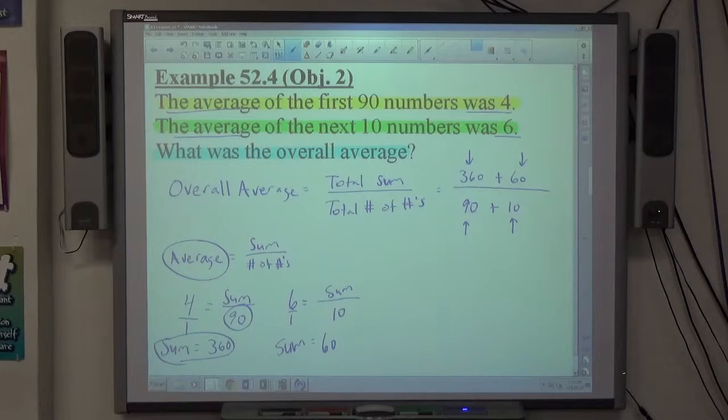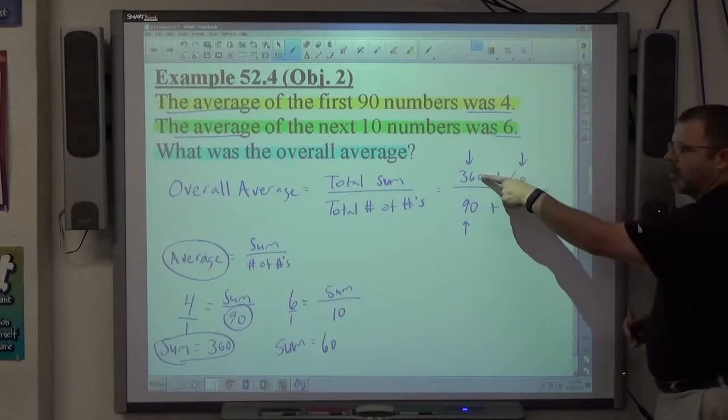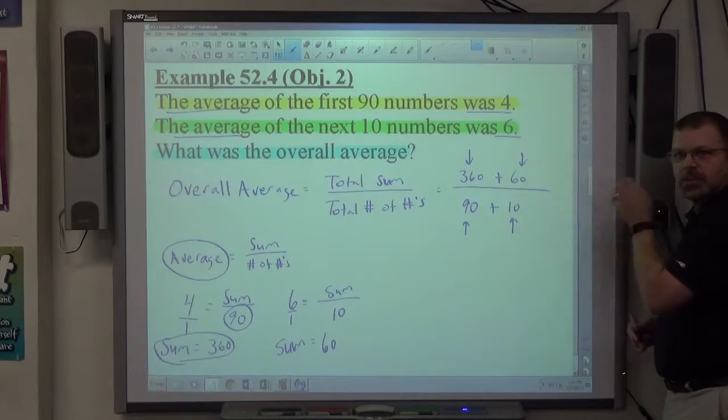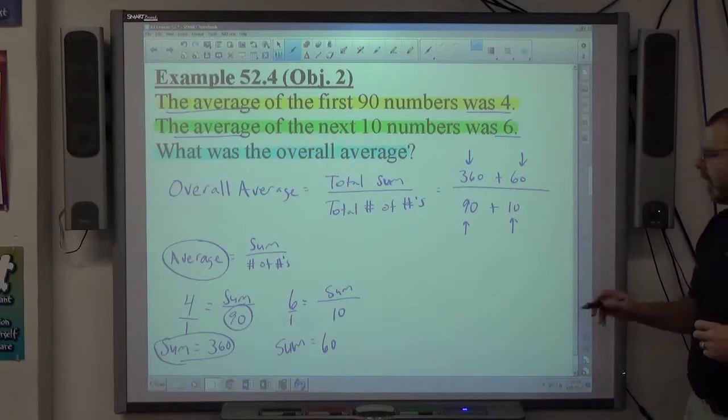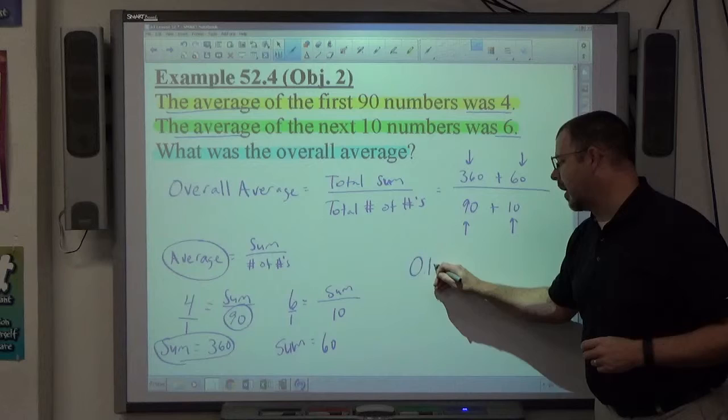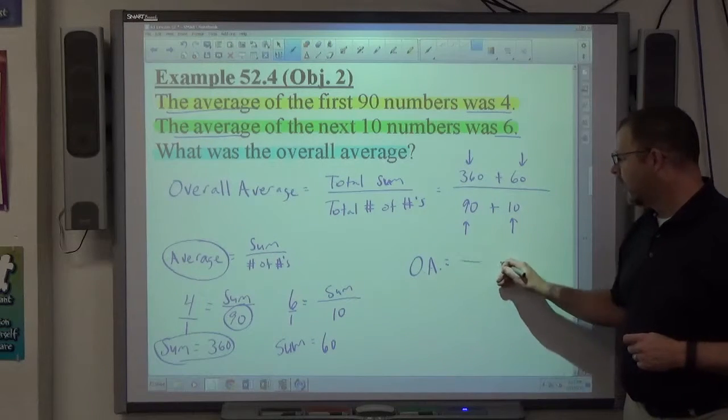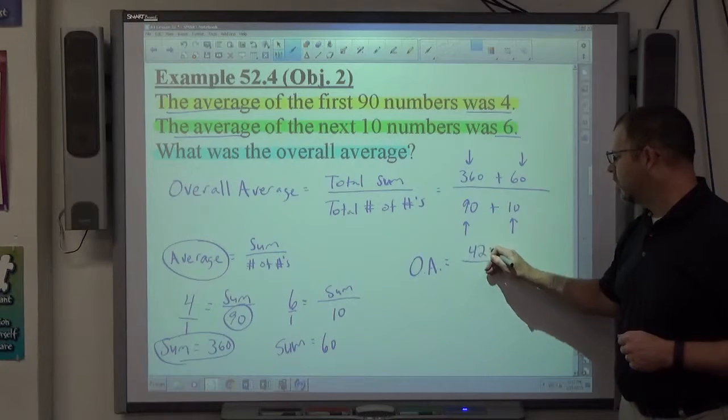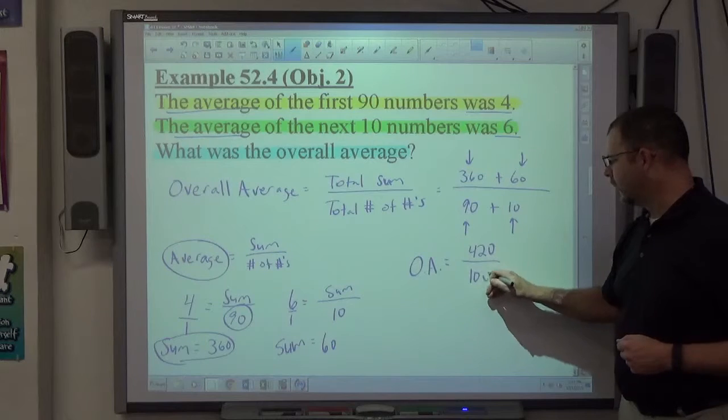So I'm trying to do overall average. I have to use the averages they gave me to find out what the sum of the numbers and how many numbers there were in each different situation. Then the overall average, I'm going to put OA for overall average. I add the top numbers. I add the bottom numbers. And then I divide.